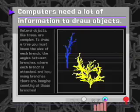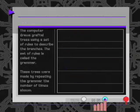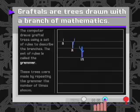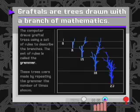For instance, to draw a tree, you need to know the size and angle of each branch, where they're attached, and how many branches there are. In order to create natural shapes without using a lot of memory space, a programmer can use a set of rules, called grammars, to describe each branch of a tree.